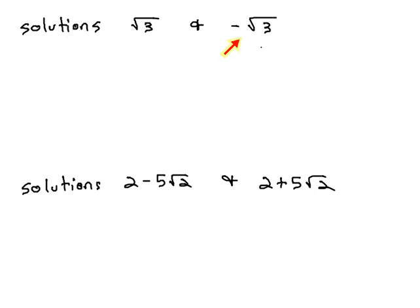With irrational solutions, we can't use the factoring in reverse method, but we can use completing the square in reverse.